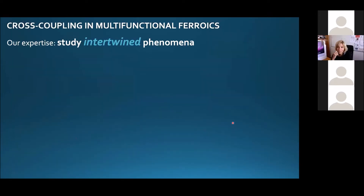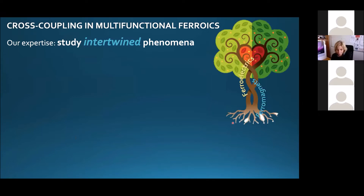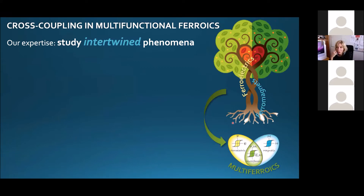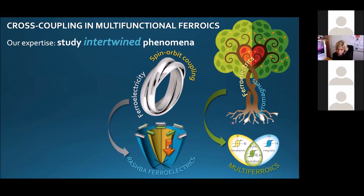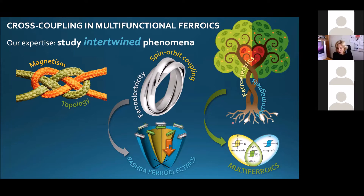Our field of expertise is cross-coupling in different materials. For a long time we studied the coupling between ferroelectricity and ferromagnetism in so-called multiferroics. Then we moved to coupling between ferroelectricity and spin-orbit coupling, proposing a class of materials called Rashba ferroelectrics, in which an electric field can tune the spin texture arising from the Rashba effect. Recently we moved to the coupling between magnetism and topology, which is the topic of today's talk.